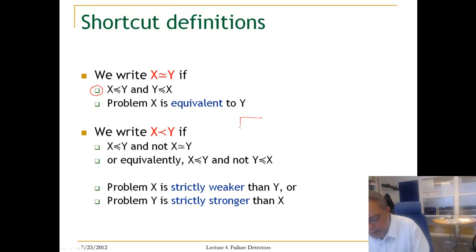The other one is more important, which is if Y can implement X, it means that X is reducible to Y, but this does not hold the other way, then we use this notation, and then we say that X is strictly weaker than Y and Y is strictly stronger than X.